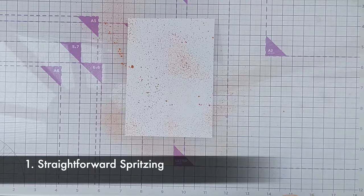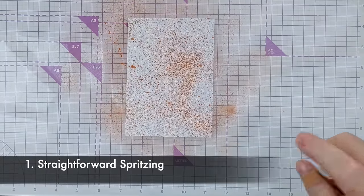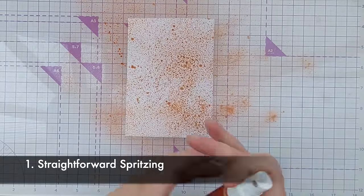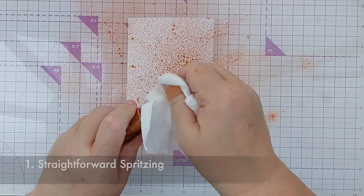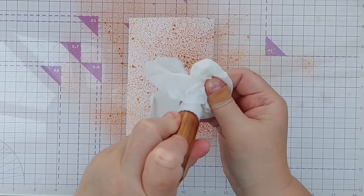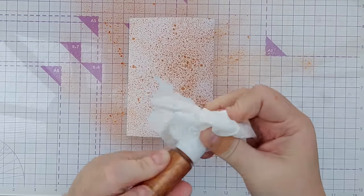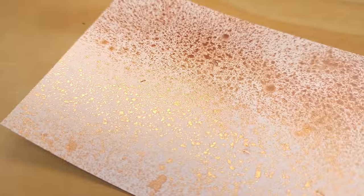So one way that you can use shimmer sprays is to do some straightforward spritzing. Just spritz your spray onto a piece of card and you get this really lovely spritzed effect. And once it's dry you get a lovely shimmer.